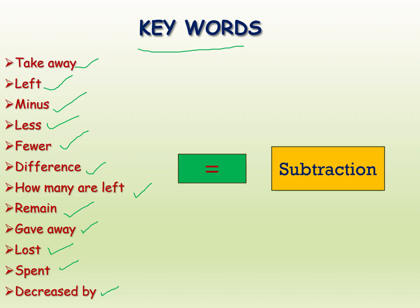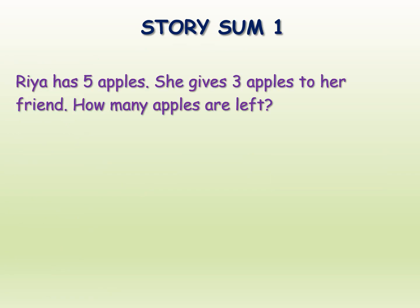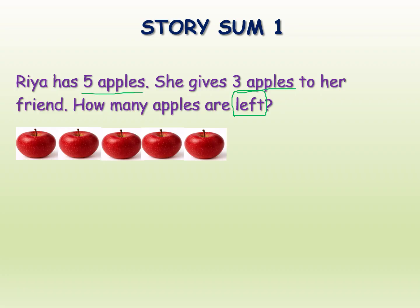Next, here is the first story sum about subtraction. What is the story? Rhea has five apples. She gives three apples to her friend. How many apples are left? See here we are using the keyword 'left', which means we should do subtraction. Here are the five apples she already has, and minus is the symbol of subtraction.